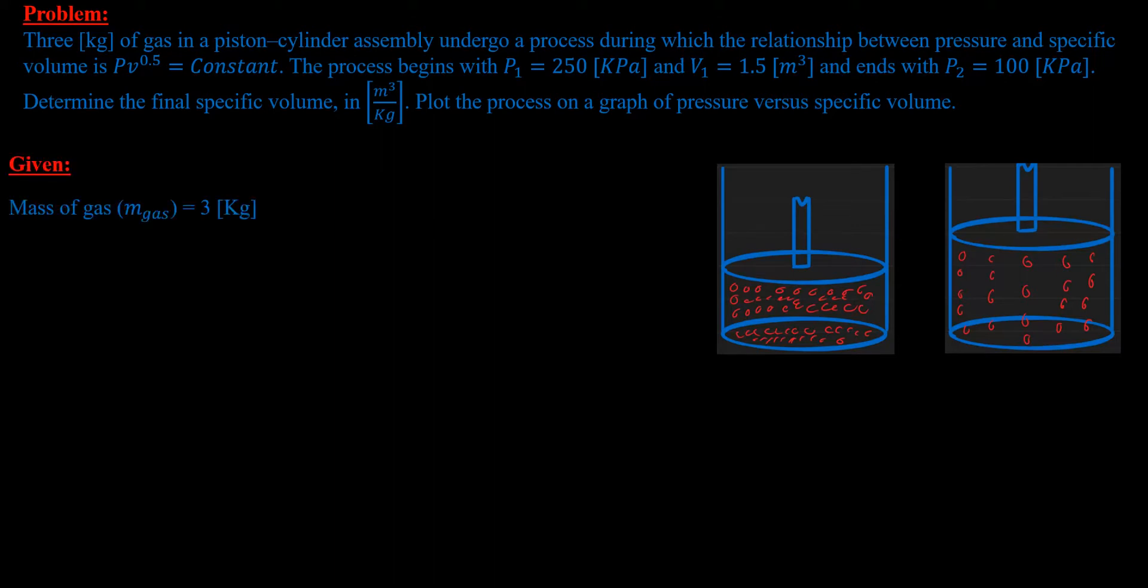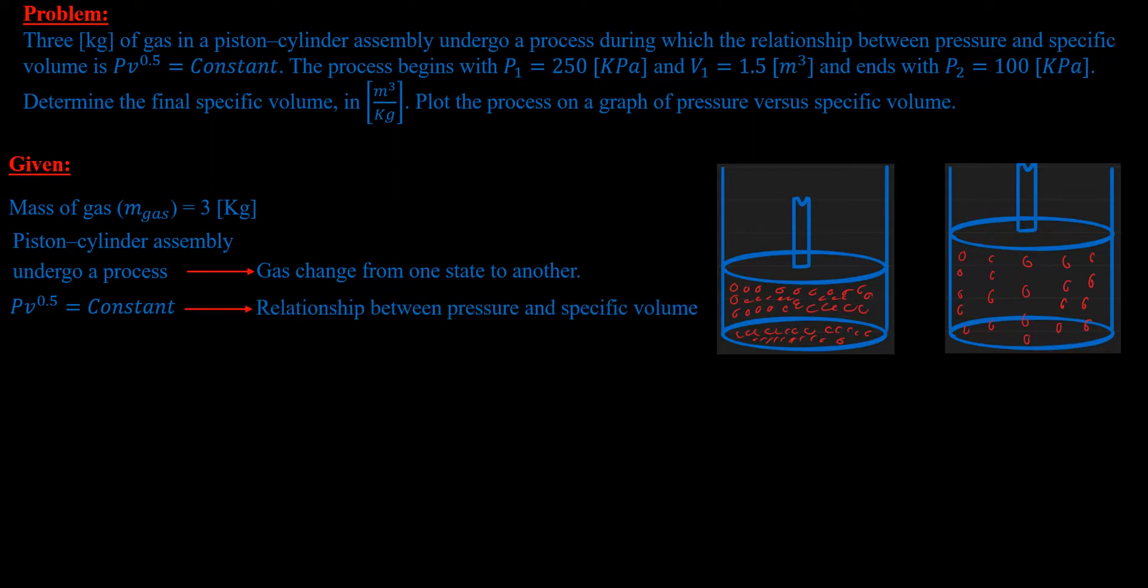It is given that we have a mass of gas, M gas equals 3 kilograms. This gas is inside a piston-cylinder assembly and undergoes a process, meaning the gas changes from one state to another. This relationship PV equals constant is between pressure and specific volume. When we say change, it means change in the properties of gas, which is pressure and volume or specific volume. We're told that P1 is 250 kilopascals, V1 is 1.5 cubic meters. The gas undergoes a process, then P2 is 100 kilopascals, and we need to find V2.